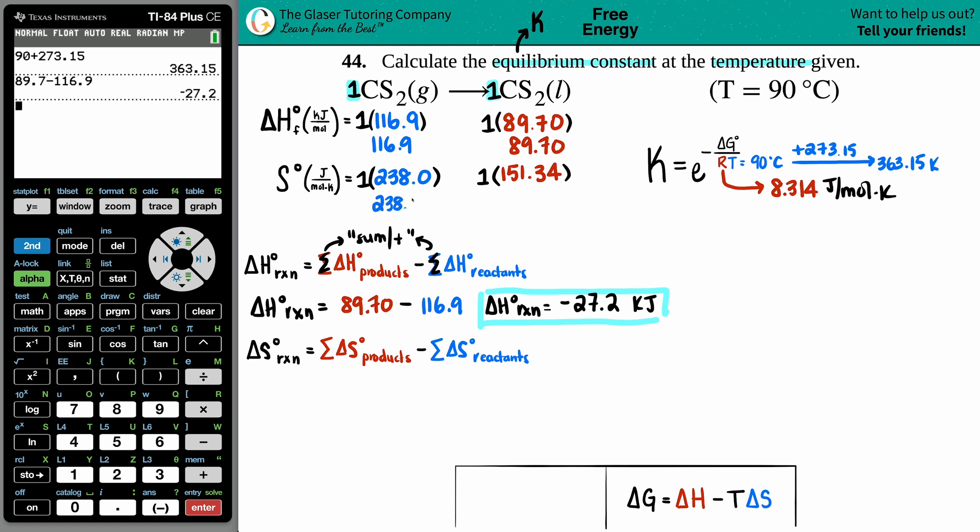So delta S for the whole reaction would be the sum of the products, 151.34, minus the sum of the reactants, which is 238.0. Delta S for your reaction is 151.34 minus 238, and it's not a favorable entropy. It's negative: negative 86.66 joules per kelvin.